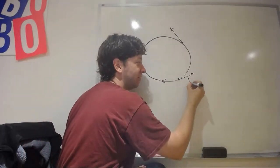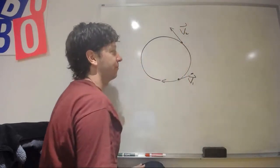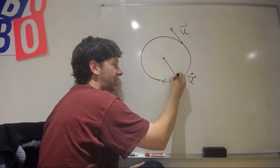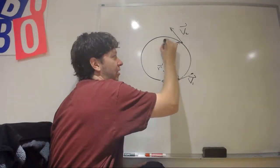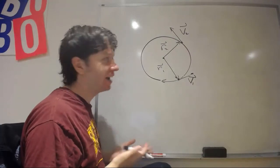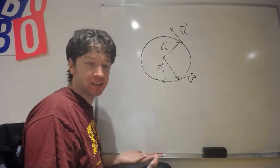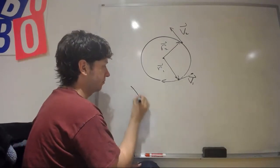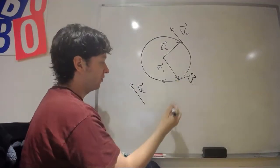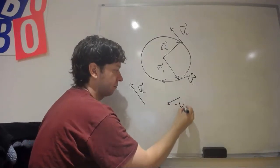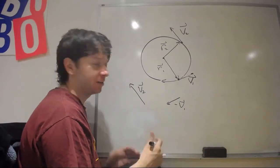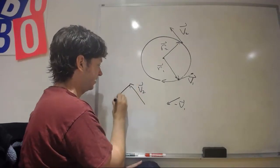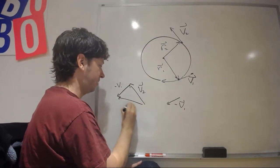Let's analyze this motion further. At some time t₁ we have velocity v₁, and at some time t₂ we have velocity v₂. We can also label position relative to the center: r₁ and r₂. To analyze how our velocity has changed, we want to find the change in velocity, which is v₂ minus v₁. Taking those vectors — v₂ and minus v₁ — and adding them gives our change in velocity.